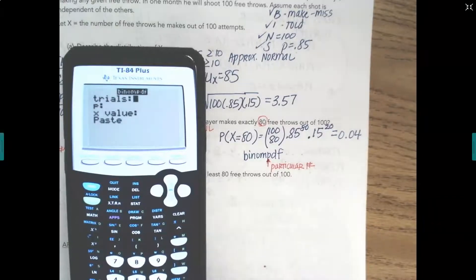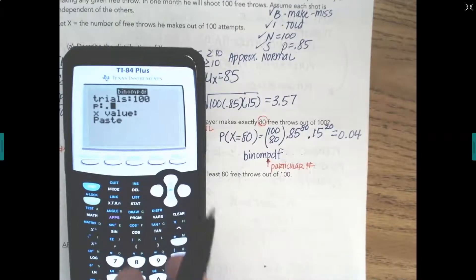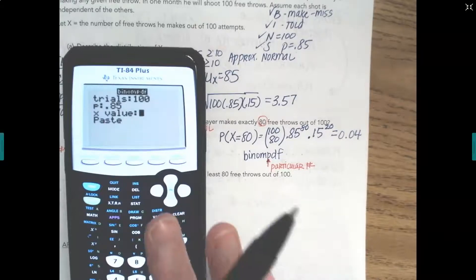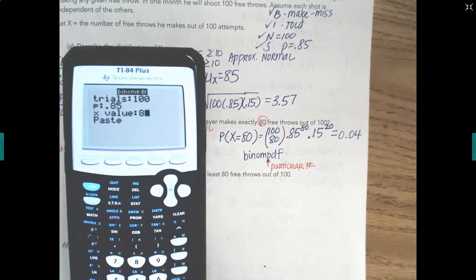Our trials, he's going to make 100 free throws. In 100 free throws, what's the probability he makes exactly 80 of them? The probability of success is .85. And the x value that we're interested in is him making 80 of the free throws. So we'll put 80 in there.